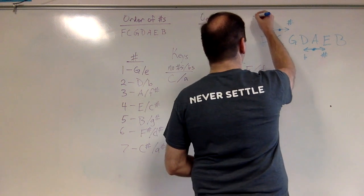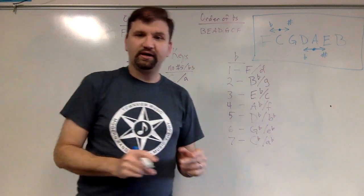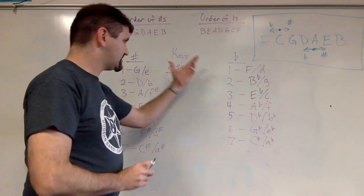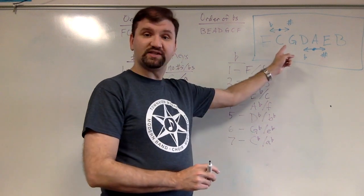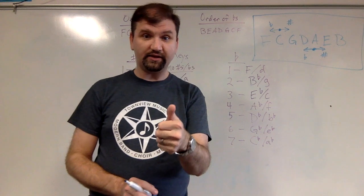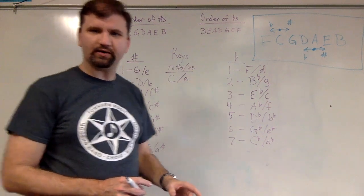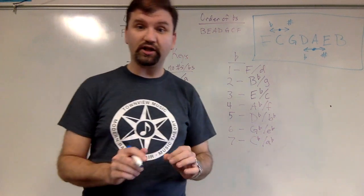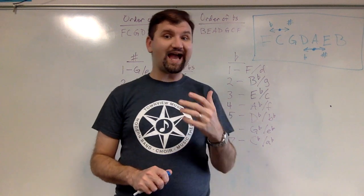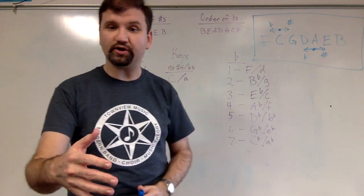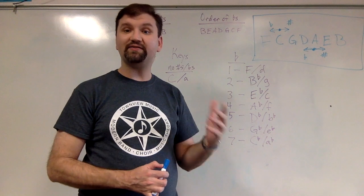So essentially, all of our work with key signatures and scales can be summarized right there. Now I say summarized, not replaced. If you don't understand how these work and why these work, this will largely become meaningless to you. And if this is confusing, go back and review your scales. Go back and review the circle of fifths. Go back and review how we came up with all of these answers here. And then, once you understand all of that, this becomes an incredible tool, a great shortcut for remembering how key signatures are built. The order the flats occur. The order the sharps occur. The order that sharp keys and flat keys occur. And how to find major and minor keys that have the same number of sharps and flats.